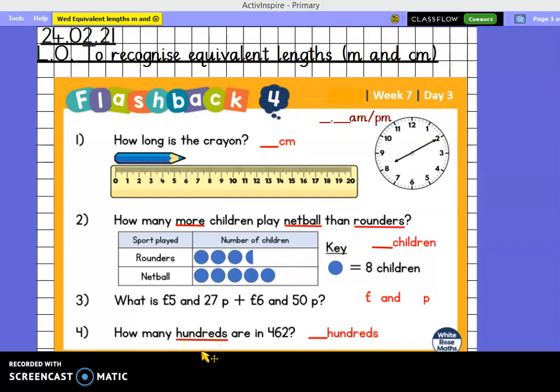Good morning Year 5 Green Group and welcome to your Wednesday maths lesson. Pause the video while you write down your date and learning objective to recognise equivalent lengths in metres and centimetres. Record that in your book and underline and then do your flashback form.